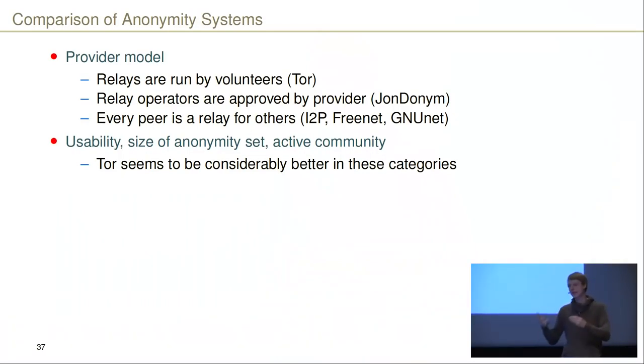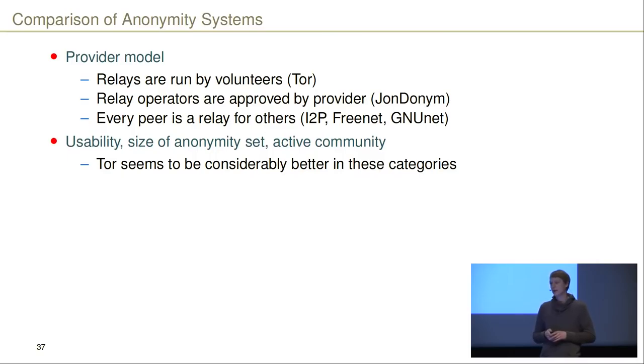Question from microphone one: Of the solutions you presented, how well do they scale? More specifically, would it be feasible to run all internet traffic on top of Tor hidden services or I2P? Tor requires volunteers to run relays and pay for the traffic, which does not scale as well as if every peer joining the network also relays traffic. It depends on whether Tor can grow as fast as a network like I2P where every participant contributes.